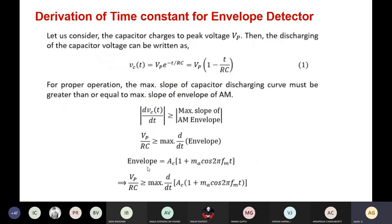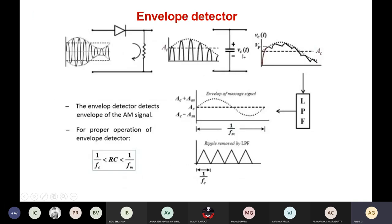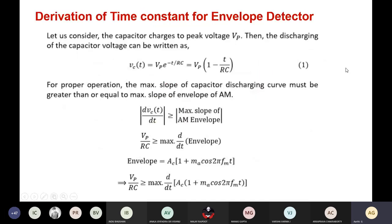Now here is the derivation for the time constant. Consider the capacitor charging to a peak voltage Vp. The capacitor charges and then discharges exponentially. The discharging of the capacitor voltage can be written as Vc(t) = Vp · e^(−t/RC). Expanding the exponential as a series, Vc(t) ≈ Vp · (1 − t/RC). We take this as equation number 1.